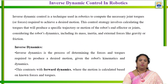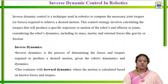So firstly we need to know what we mean by inverse dynamic control. What exactly is inverse dynamic control in robotics? Why it is being used? This is a technique which is used in robotics to compute the necessary joint torques required for achieving a desired motion. In order to achieve a desired motion with respect to the torque or force, we need to compute the necessary technical control dynamics — that is nothing but the inverse dynamic control used in the robotic system.